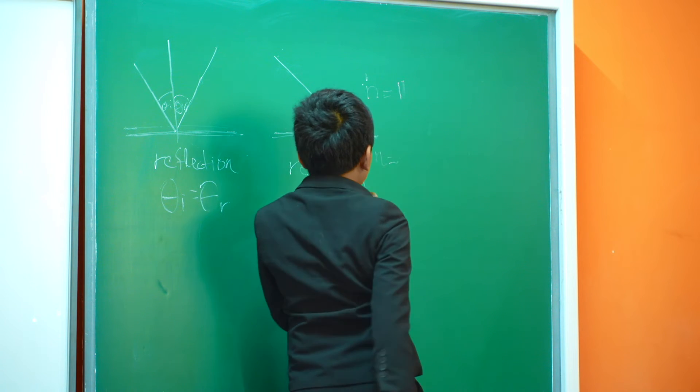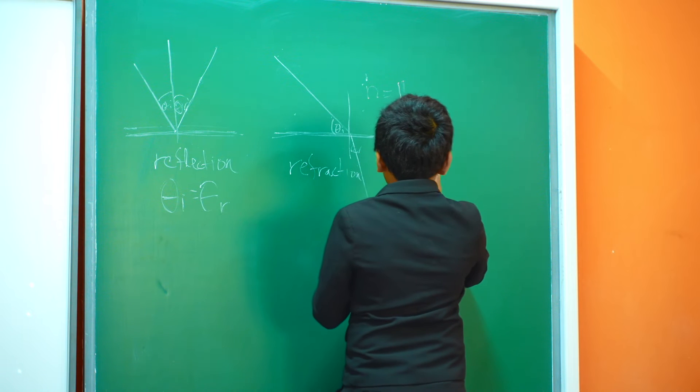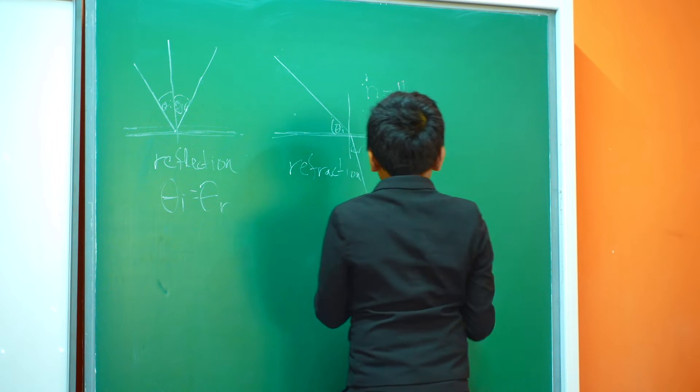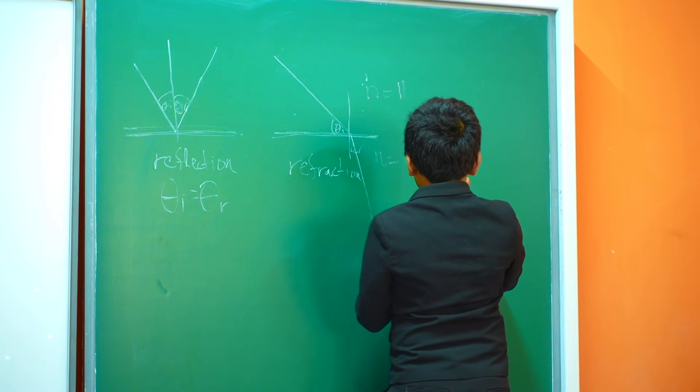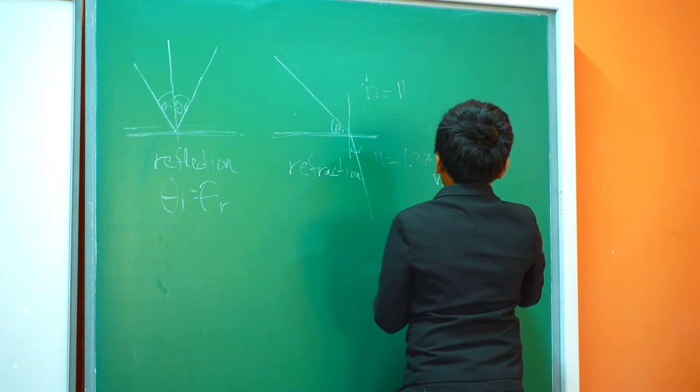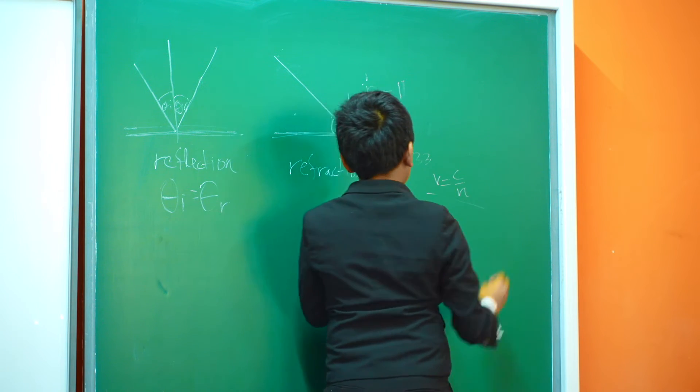So for example, if n is lower, light moves faster. If n is higher, light moves slower. And I'm pretty sure it follows the equation v equals c divided by n.